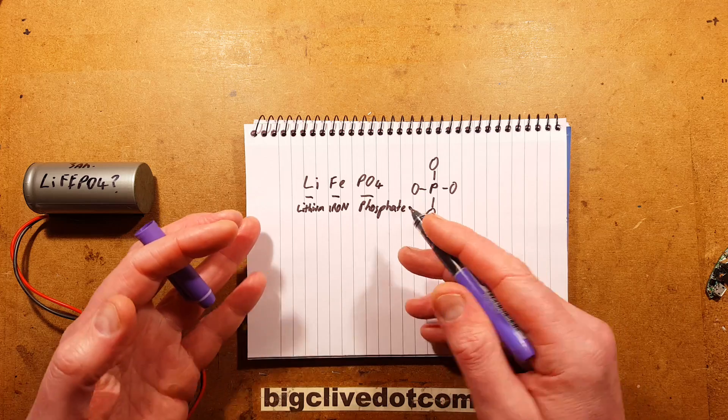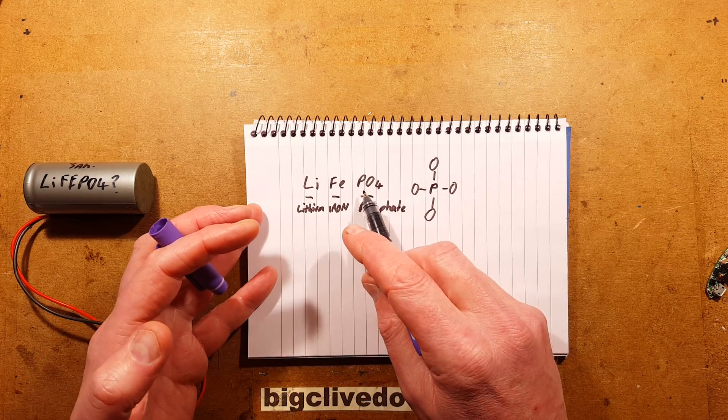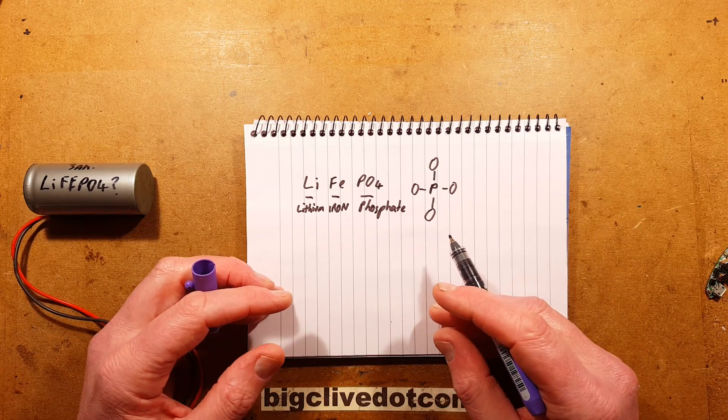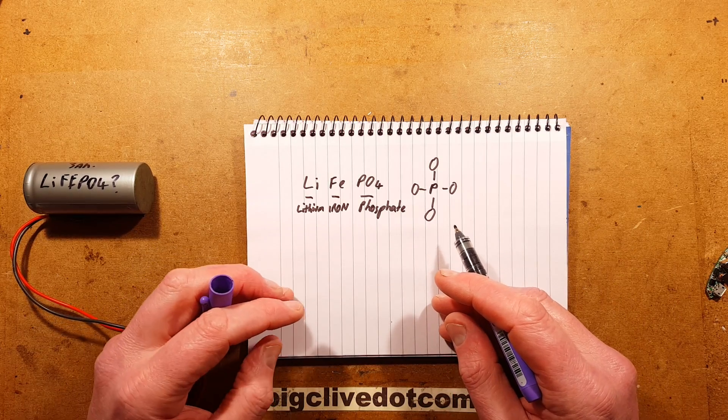The other name for this—I used to call these lithium ferrous phosphate just because Fe, I always thought ferrous, and ferrous is iron. It turns out that they are also called lithium ferrophosphate cells. It's just the other name for them.